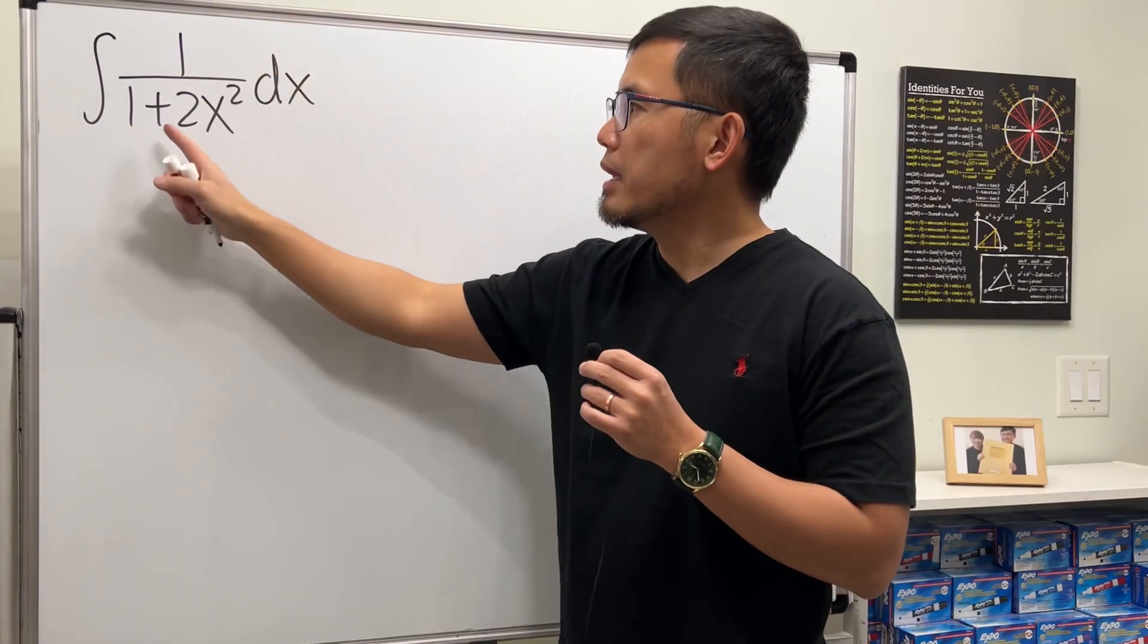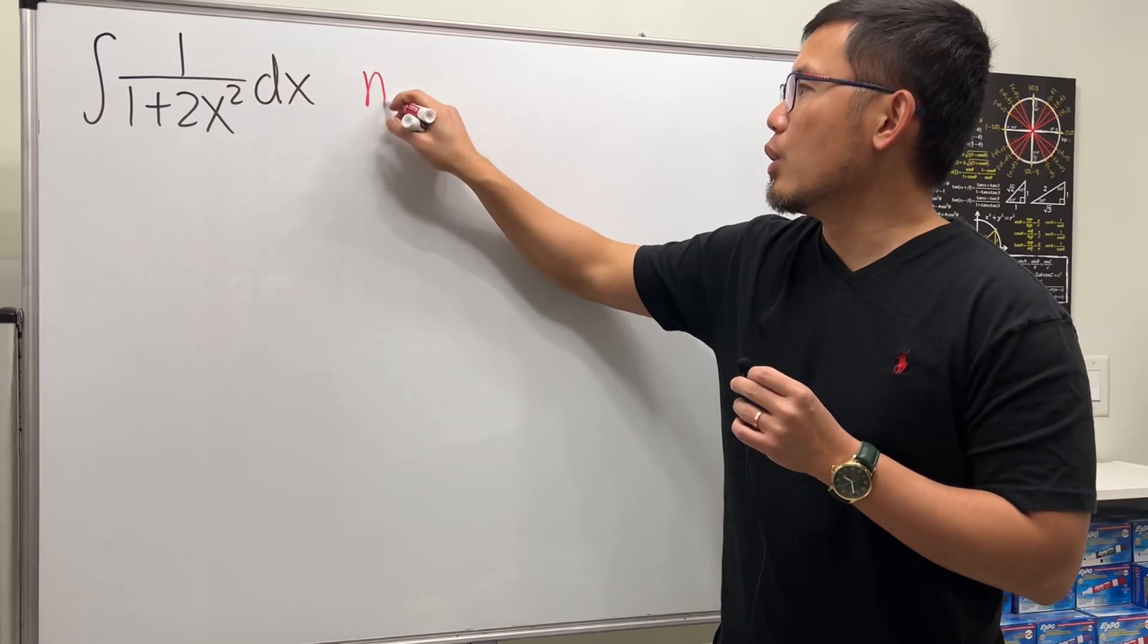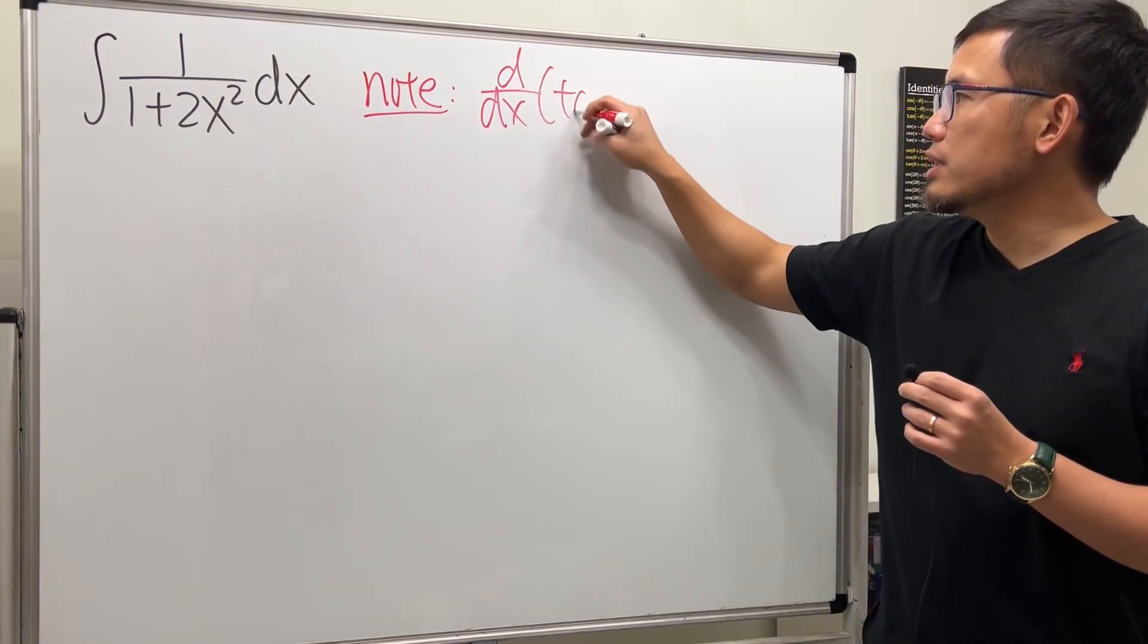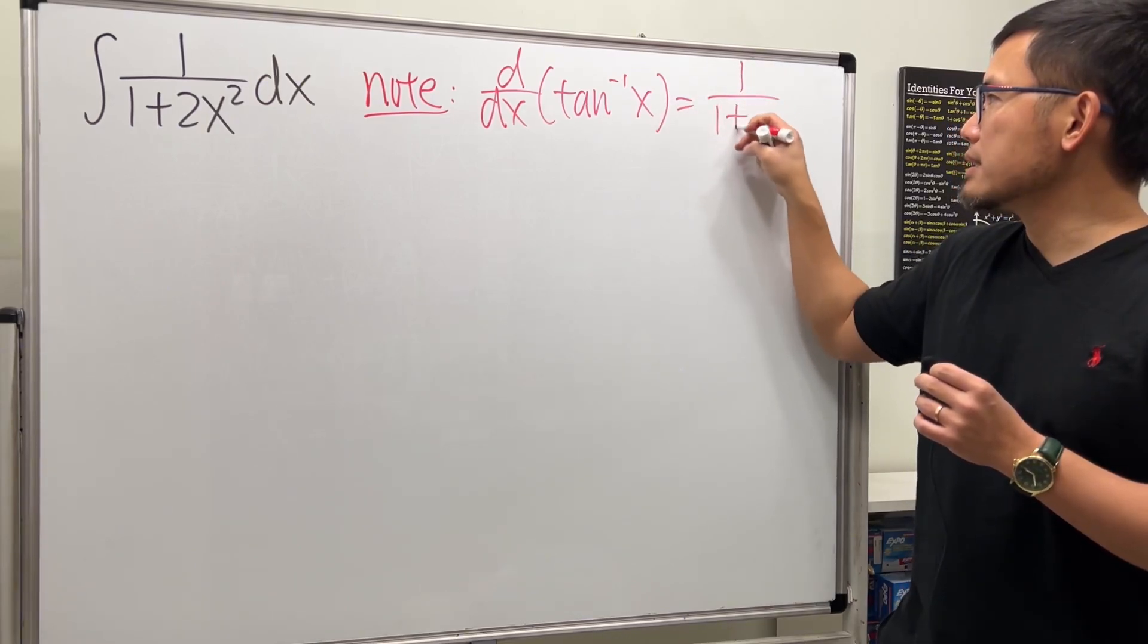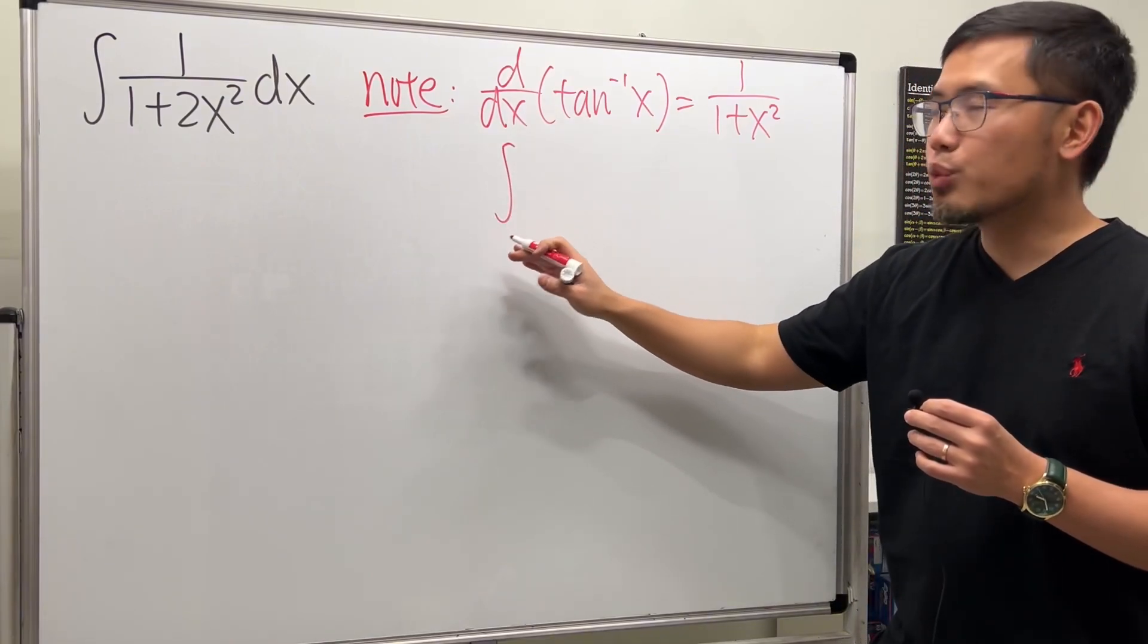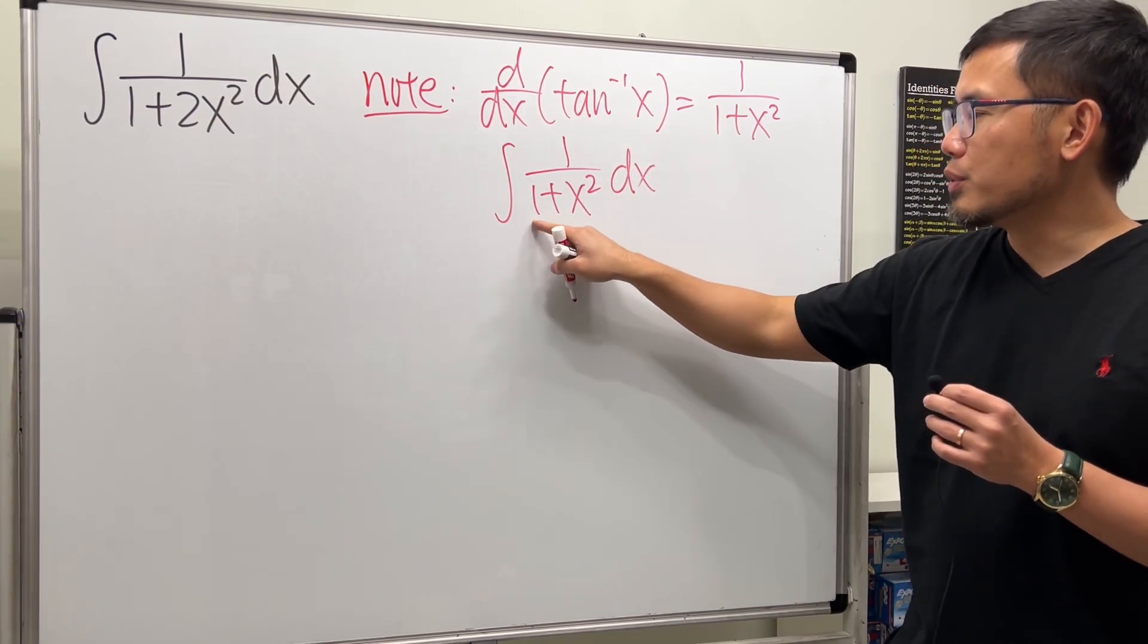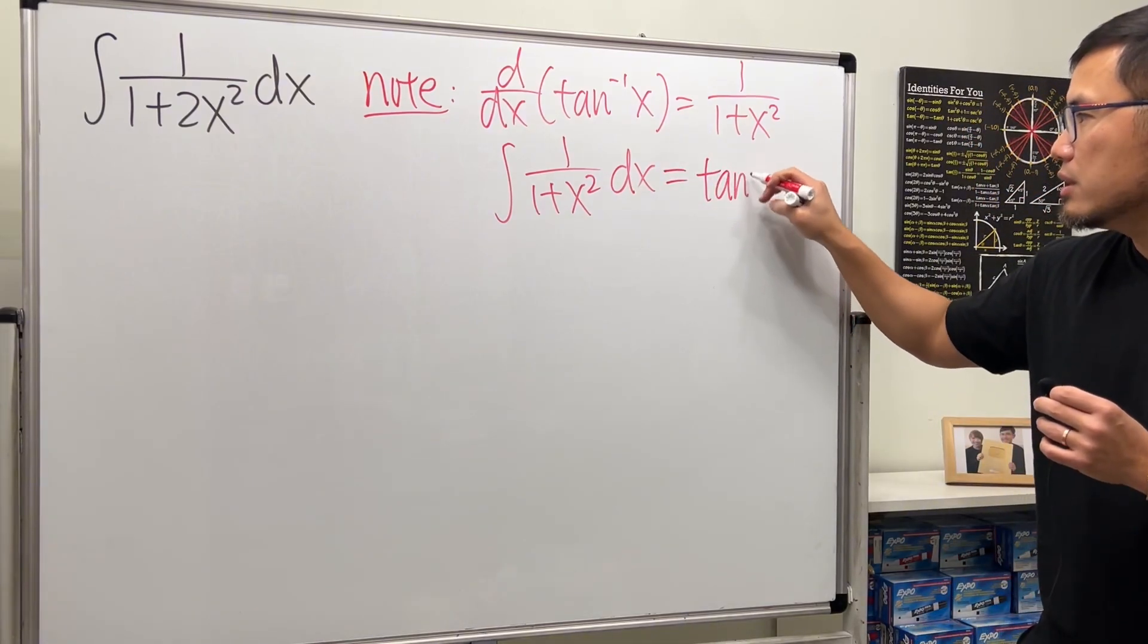we have a 1 on the top and the bottom is the sum of two squares. This is what we need to know: if we take the derivative of inverse tangent of x, this gives us 1 over 1 plus x squared. So if we take the integral of 1 over 1 plus x squared, you see we have a sum of two squares on the bottom and the top is just 1. This gives us inverse tangent of